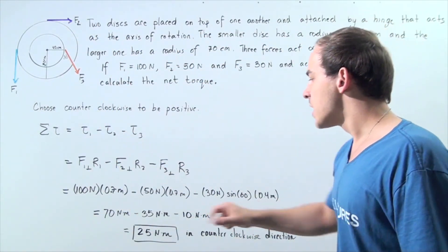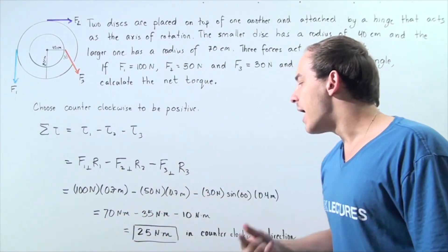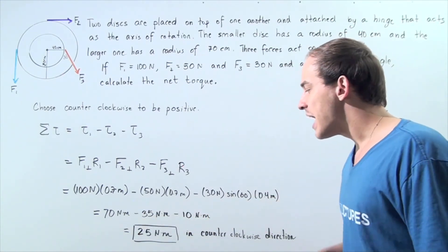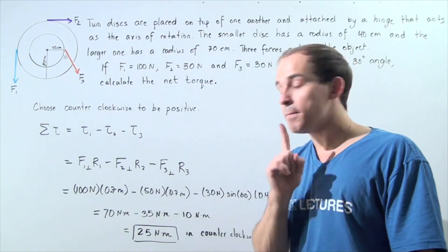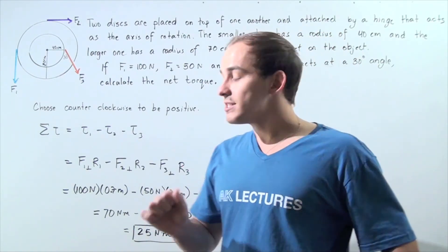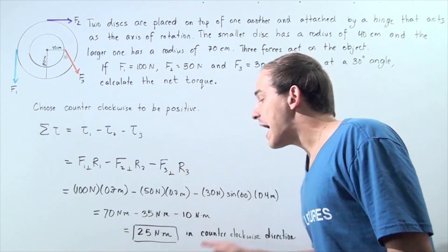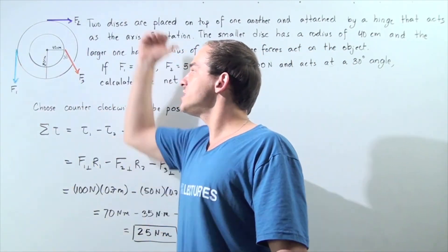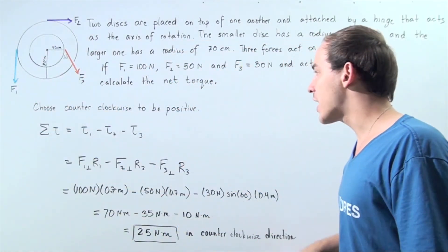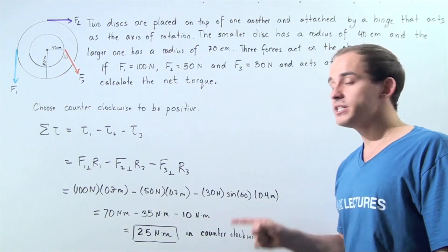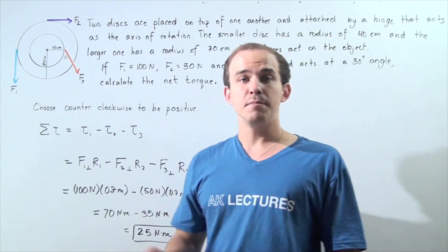So we get 70 minus 35 minus approximately 10, which equals approximately positive 25 newton-meters. So our torque value is positive, meaning the object will rotate in a counterclockwise positive direction with a net torque of 25 newton-meters.